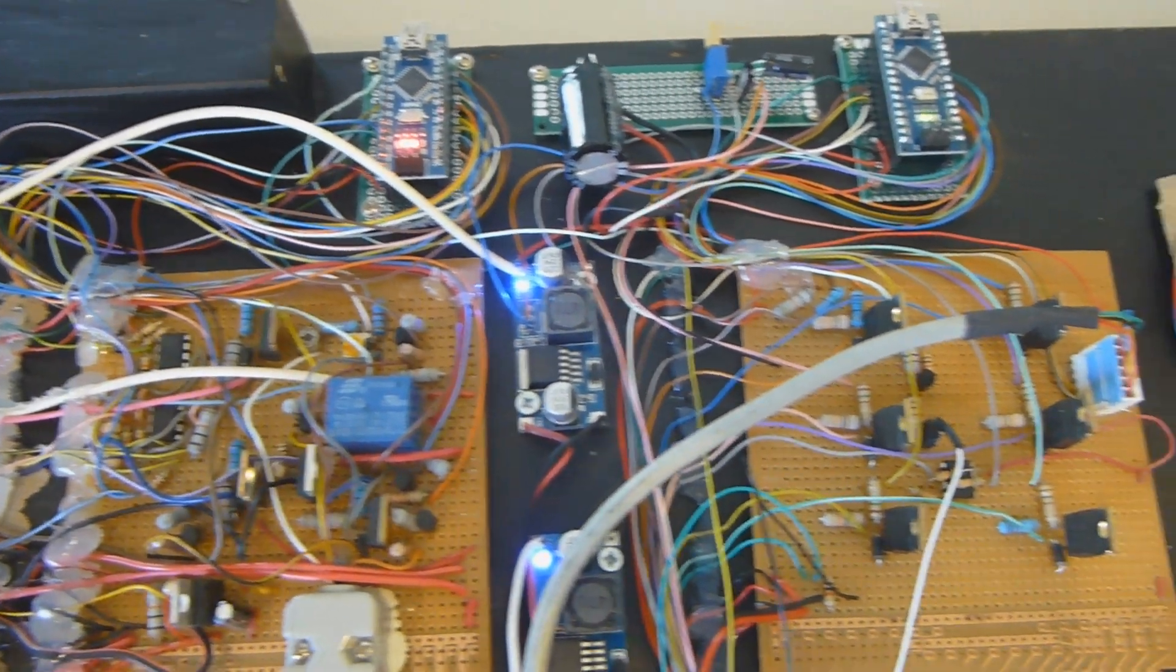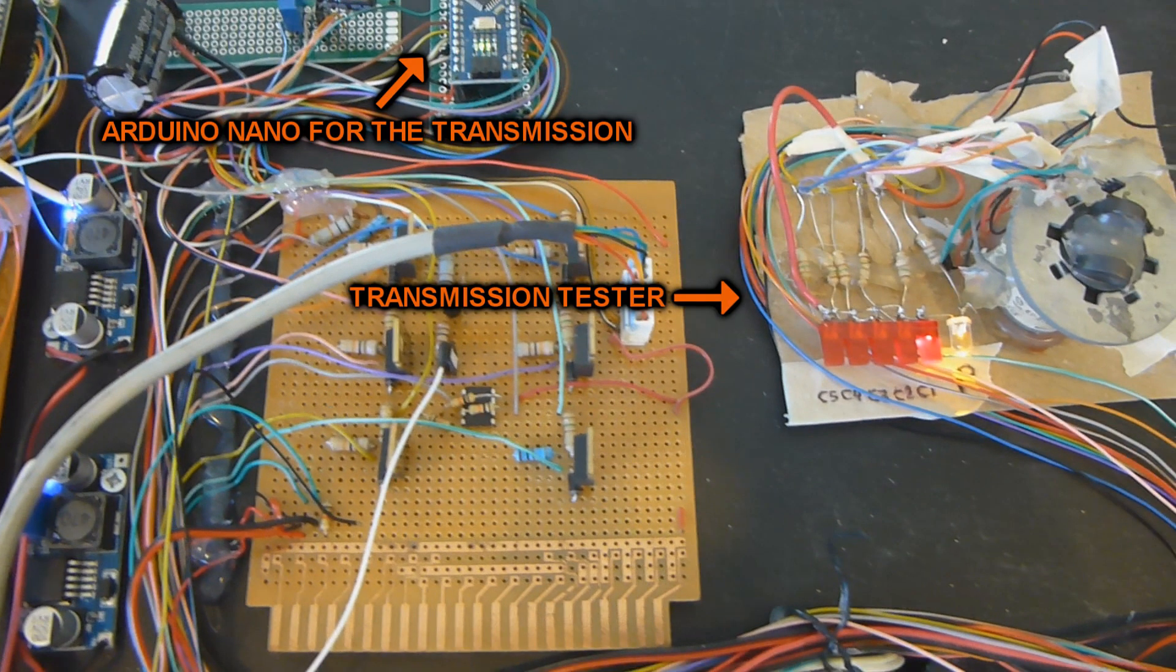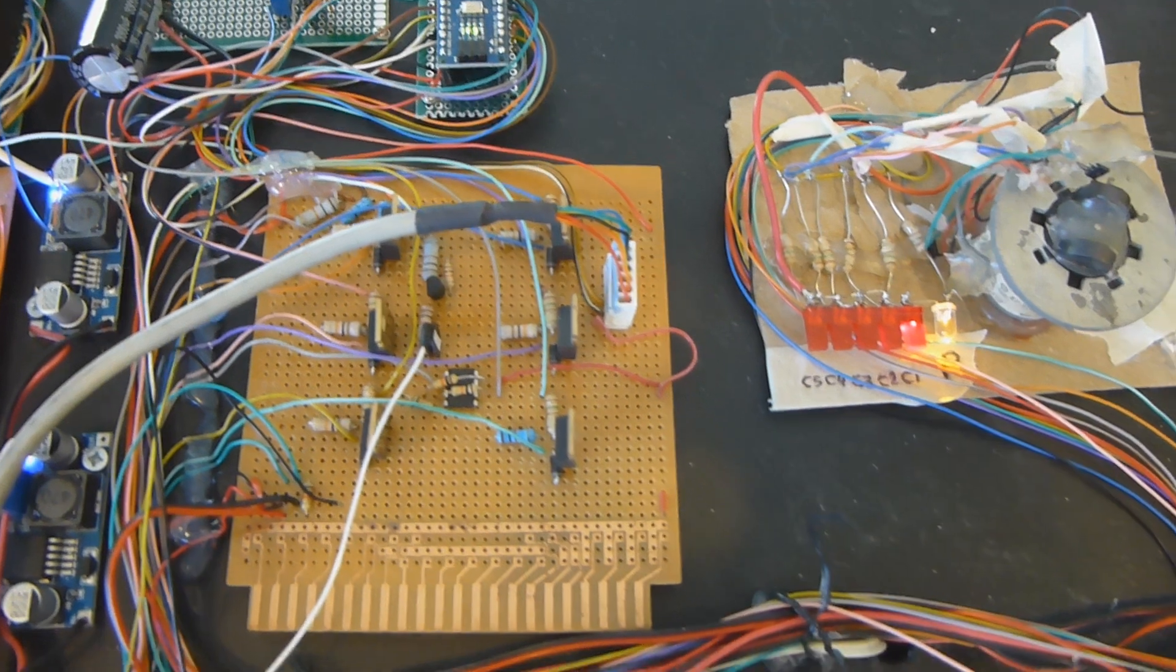The second Arduino Nano and circuit board are for the automatic transmission I plan to build using 3D printed parts. For now I just have a few LEDs and a motor with a speed sensor for testing purposes.